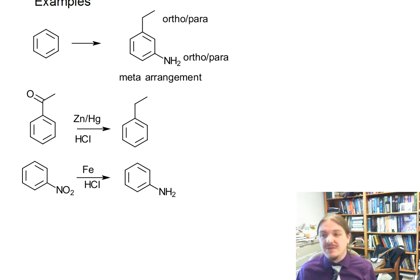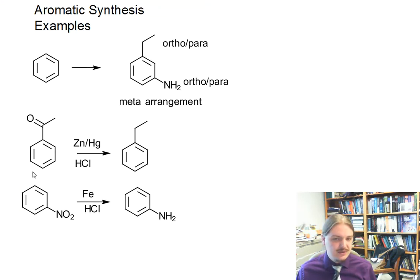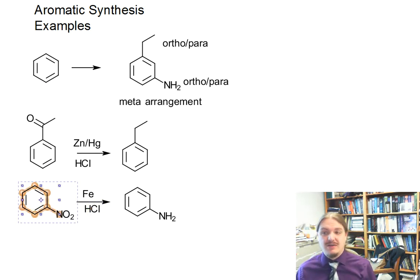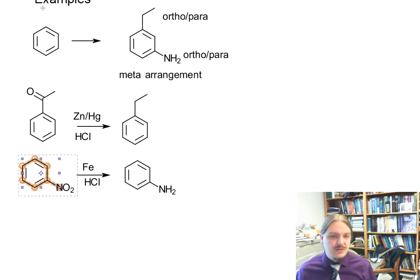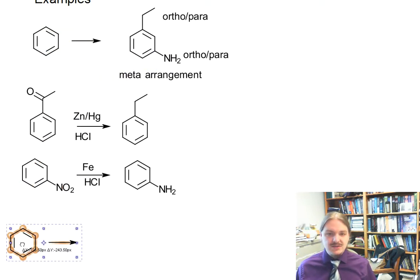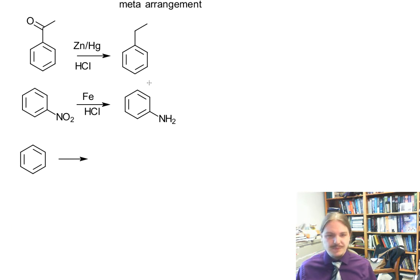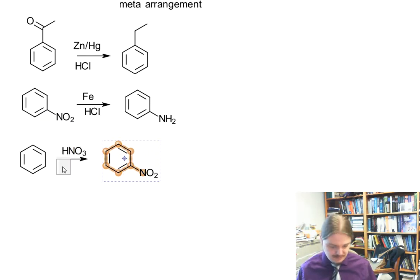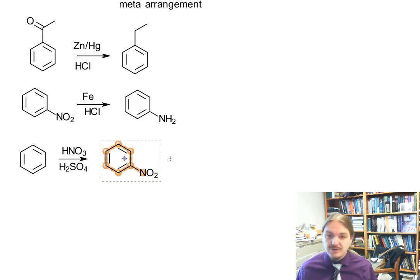Now I can do either of these two groups. One of them certainly feels appealing because the nitro group is the known precursor to the amine — you can't add the amine directly, you have to do the nitro. So you might think it seems wise to start with the nitro group. We nitrate benzene. Now we have the nitro group, which is a meta director.